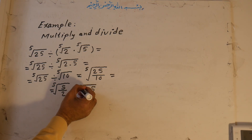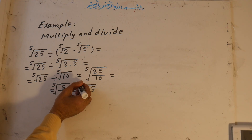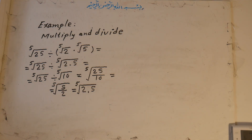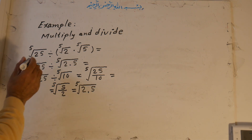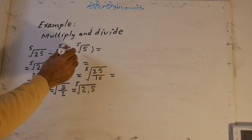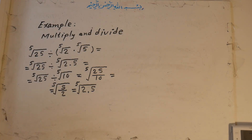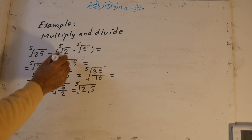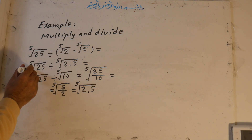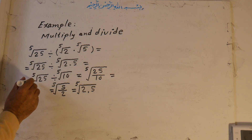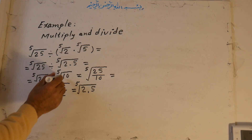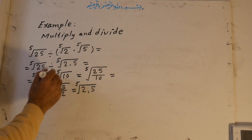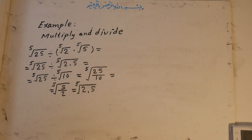To repeat for multiply and divide: 25 under root 5 divided by 2 under root 5 times 5 under root 5. First simplify the multiplication: 2 times 5 is 10 under root 5. Then 25 under root 5 divided by 10 under root 5 equals 25 over 10 under root 5, which equals 5 over 2 under root 5, or 2.5 under root 5.